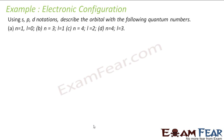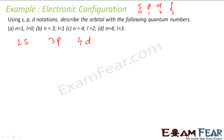Using SPD notation, describe the orbitals for the following quantum numbers. n=1, L=0 becomes 1S since L=0 is S. n=3, L=1 means P, so this becomes 3P. n=4, L=2 means D, so this becomes 4D. n=4, L=3 means F, so this becomes 4F.